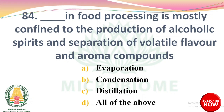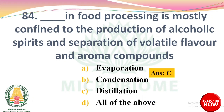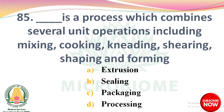Next question: dash in food processing is mostly confined to the production of alcoholic beverages and separation of volatile flavor and aroma compounds. Options: evaporation, condensation, distillation, all of the above. The right answer is Option C: distillation. Next question: dash is a process which combines several unit operations including mixing, cooking, kneading, shearing, shaping, and forming. Options: extrusion, sealing, packaging, processing. The right answer is Option A: extrusion.